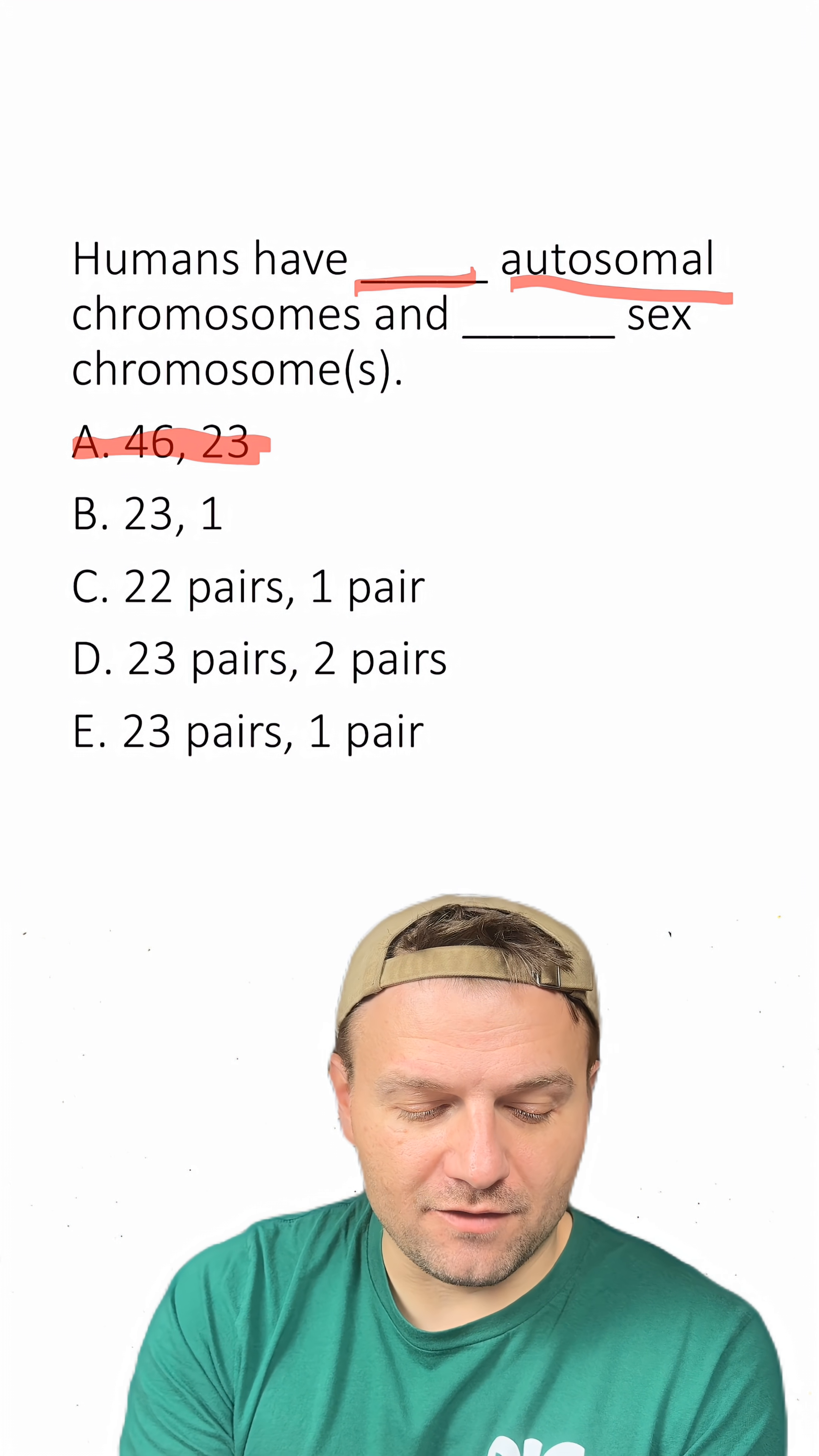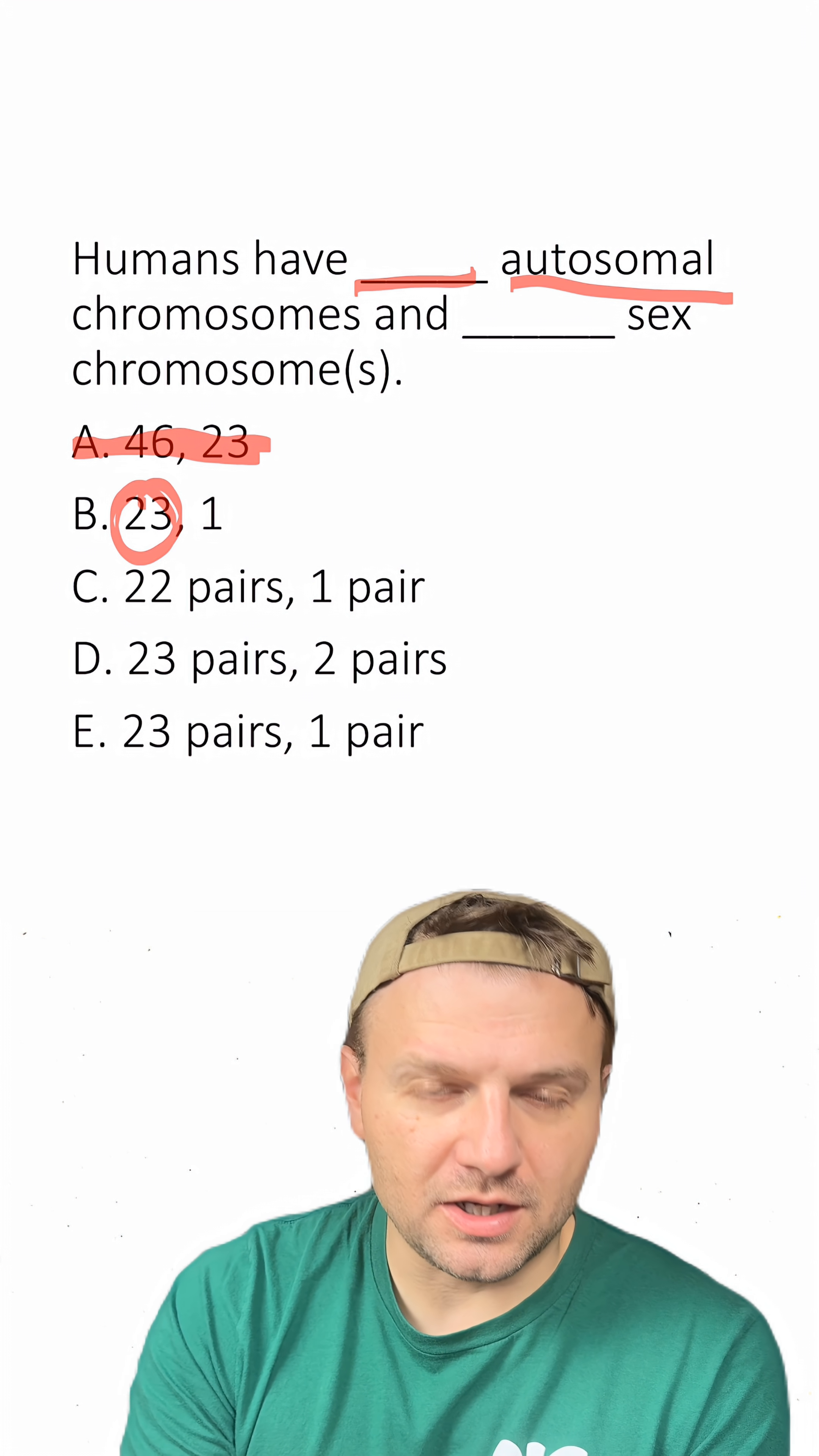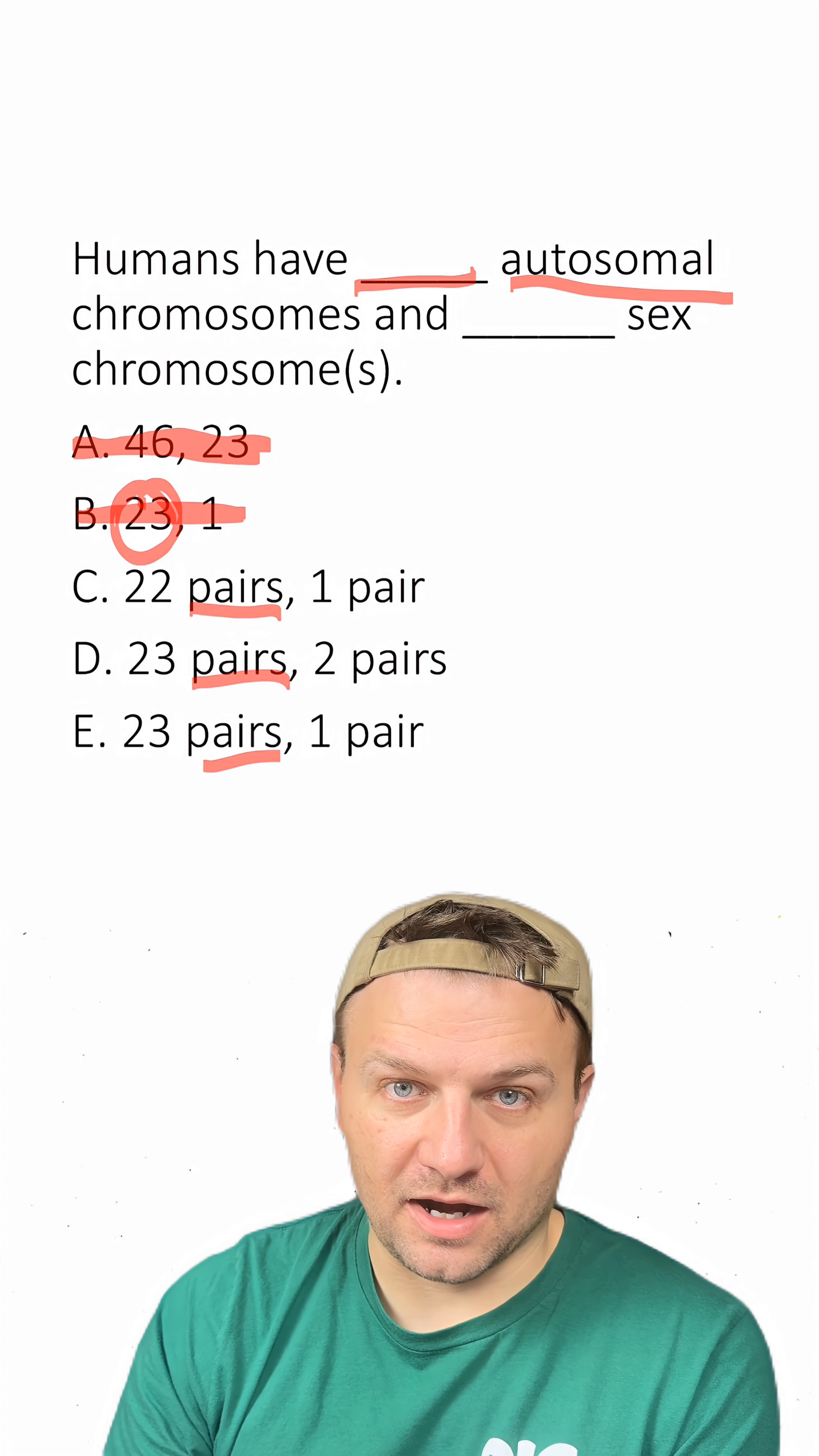They also have more than just 23 chromosomes, and they usually come in pairs again, so 23 is incorrect. So now we're down to these here that are the pairs.